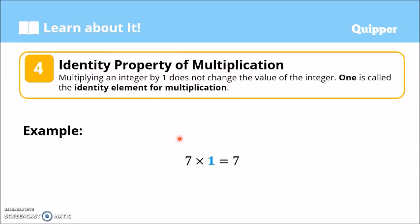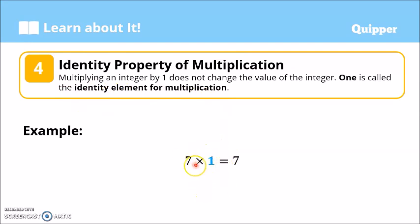Ang multiplication naman ay meron ding identity property. The identity element for multiplication is 1. Multiplying an integer by 1 does not change the value of the integer. Example: 7 times 1 equals 7. Para siyang salamin — kung 7 ay nakaharap sa kanya, the answer is 7 pa rin. 100 times 1 equals 100; 1 million times 1 equals 1 million. So 1 is the identity element for multiplication, and the property is called the identity property of multiplication.